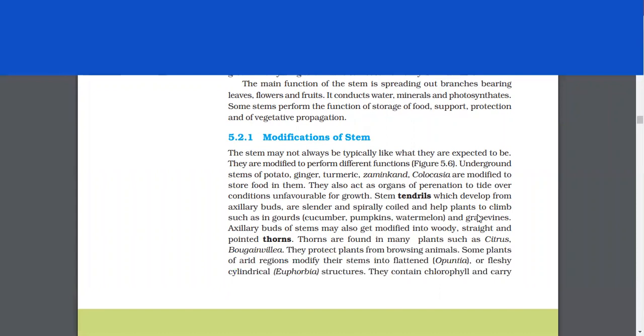Underground stems of potato, ginger, turmeric, zaminkand, colocasia are modified to store food in them. They also act as organs of perennation to tide over conditions unfavorable for growth. Stem tendrils which develop from axillary buds are slender and spirally coiled and help plants to climb such as in gourds, which are cucumber, pumpkins, watermelon, and grapevines.